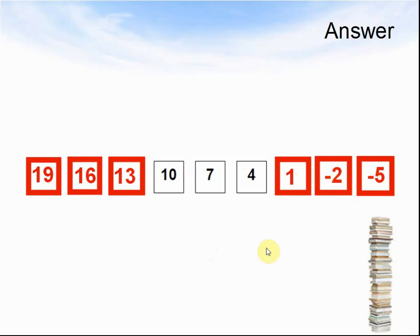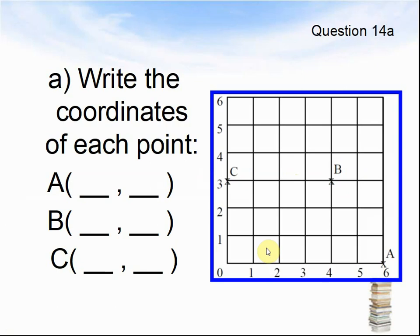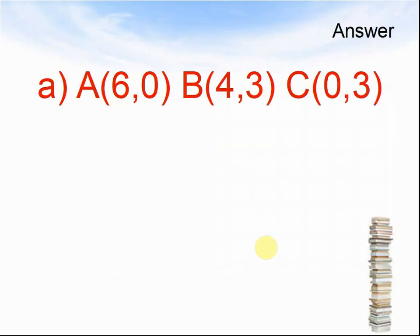Let's rather look at the next question. Question 14A. Write the coordinates of each point: A, B, and C. Pause the video until you are ready. Here come the answers. A: 6, 0. B: 4, 3. And C: 0, 3.